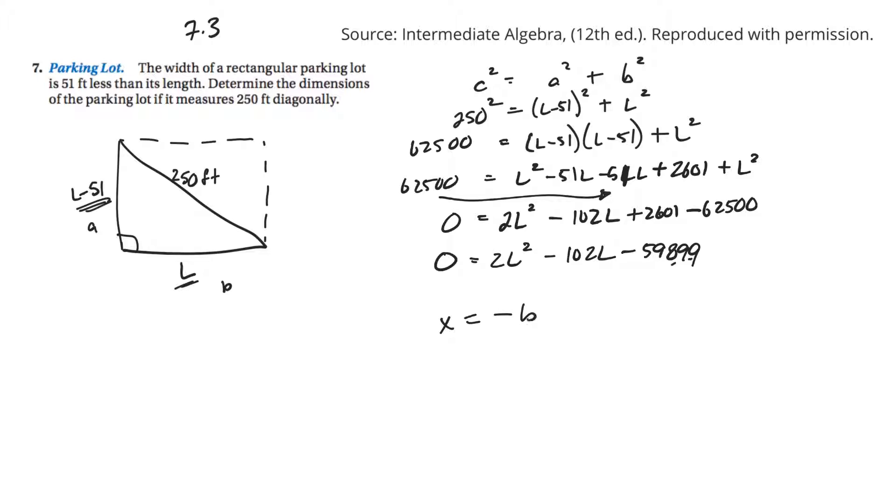Now, x equals minus b plus or minus square root of b squared minus 4ac all over 2a. So a is 2, b is negative 102, and c is that long number. Plug them in and see what you come up with.